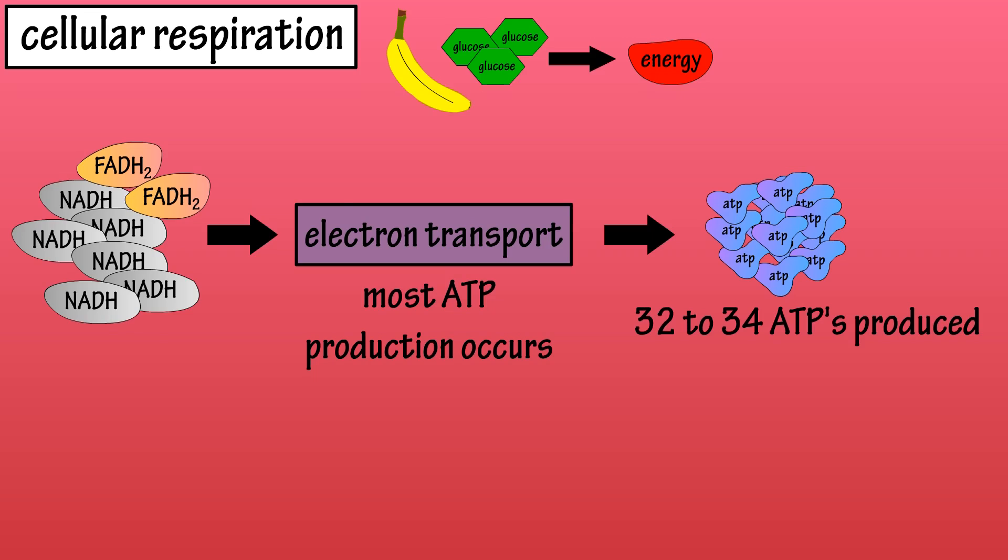So, in theory, we have two ATPs from glycolysis, two ATPs from the citric acid cycle, and 34 from the electron transport chain, for a total of 38 ATPs produced.